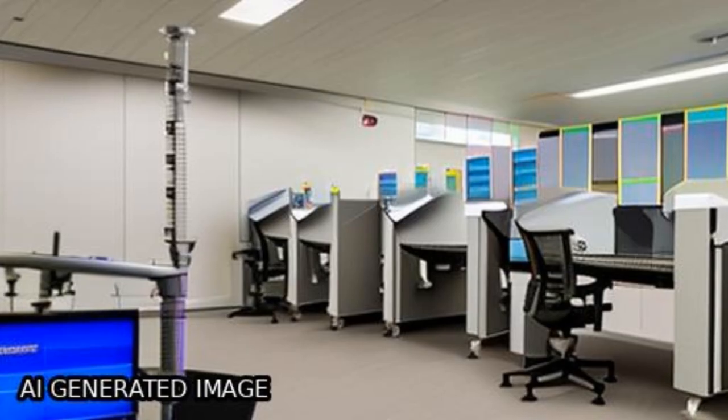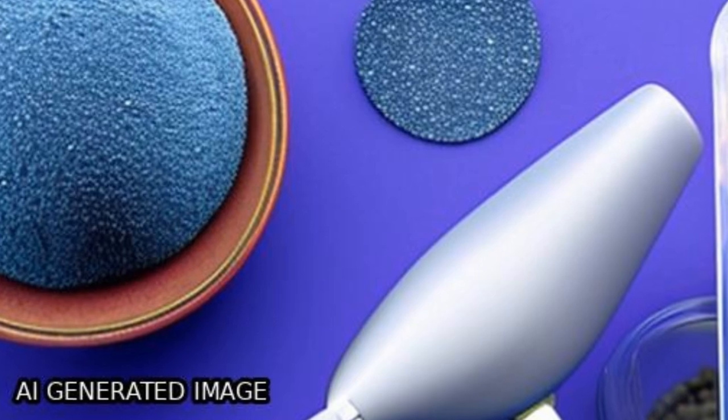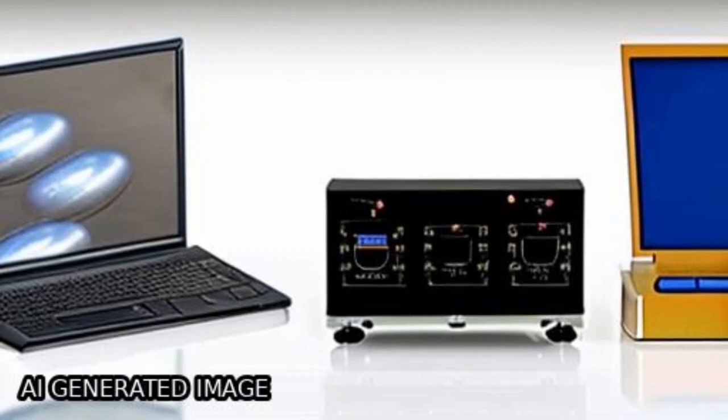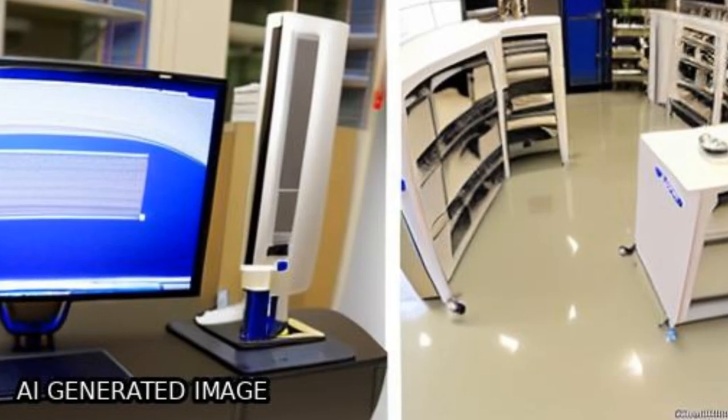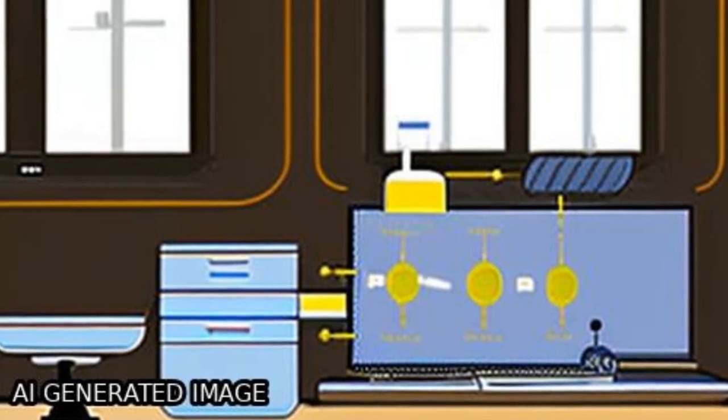Transmittance and absorbance spectra revealed an increase in optical band gap from 3.66 eV to 3.85 eV as Ru amount increased due to the Moss-Burstein effect.